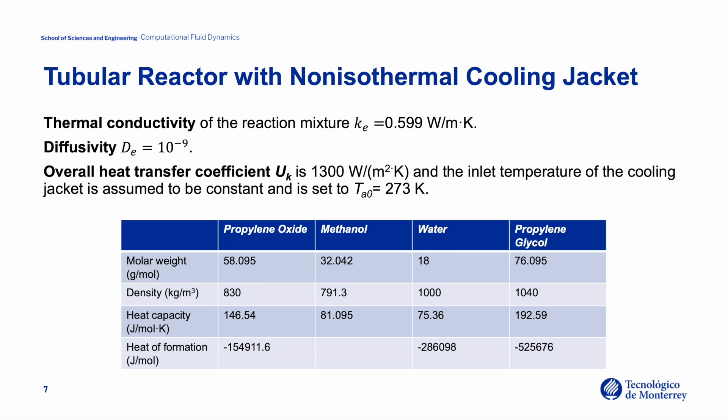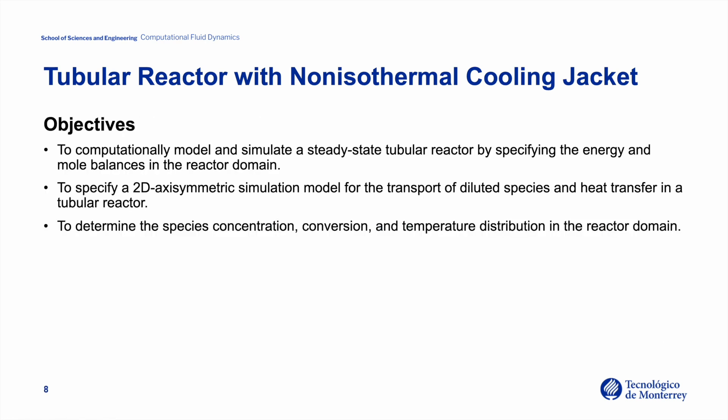Regarding the species properties, we are given the molar weight, density, heat capacity, and heat of formation for propylene oxide, methanol, water, and propylene glycol. The objectives of this tutorial are: first, to computationally model a steady-state tubular reactor specifying energy and mole balances; second, to set up a 2D axisymmetric simulation for transport of diluted species and heat transfer; and third, to determine species concentration, conversion, and temperature distribution in the reactor domain.